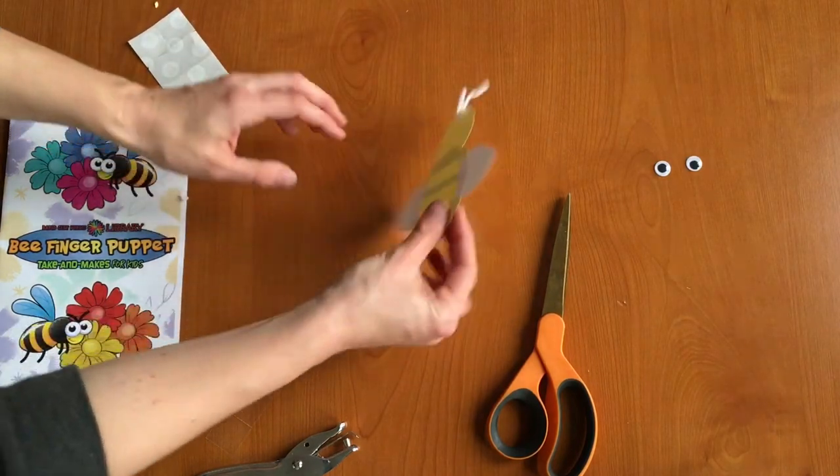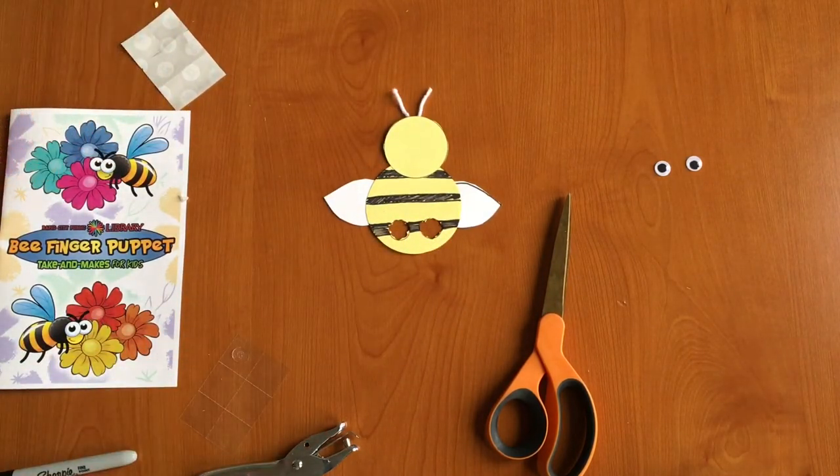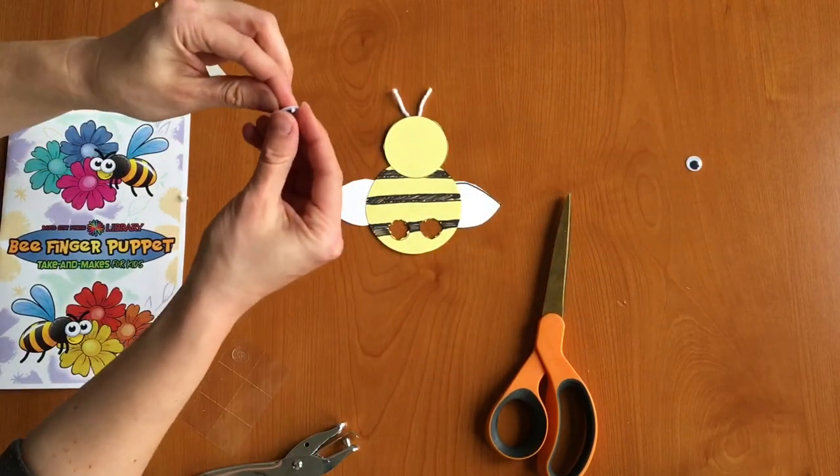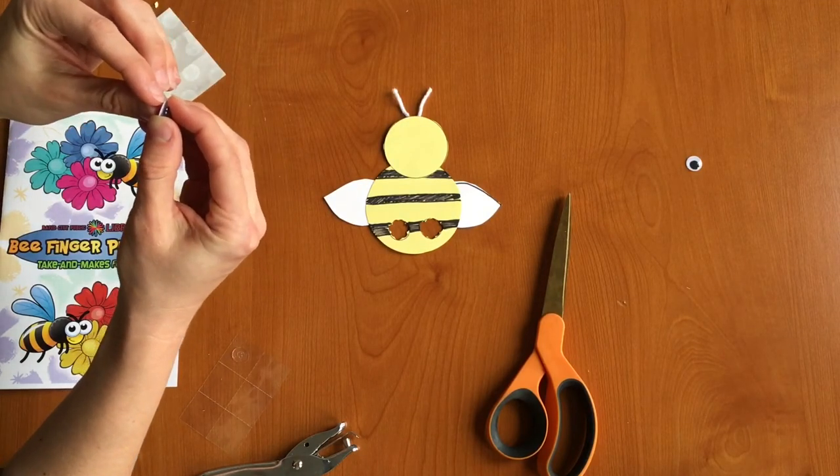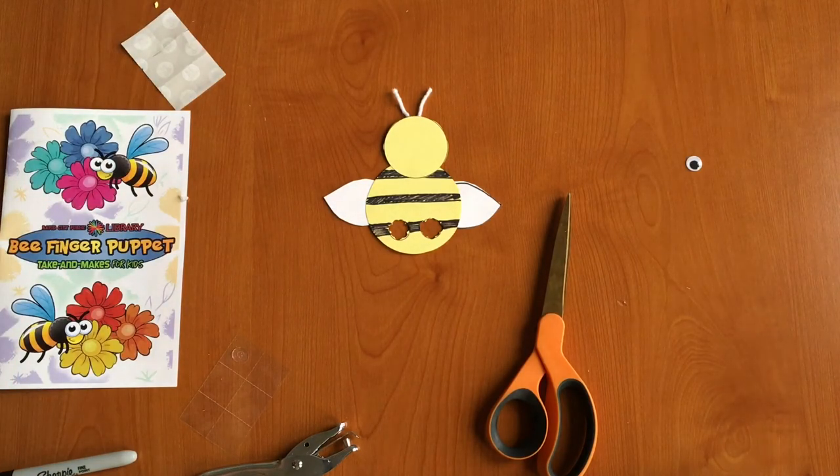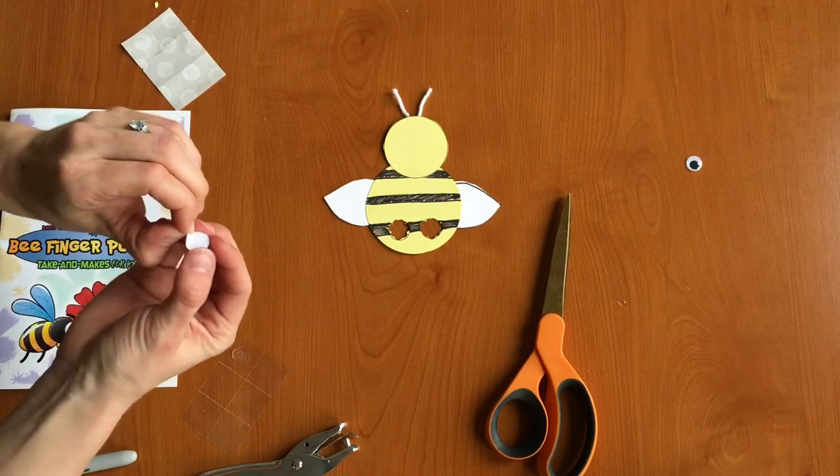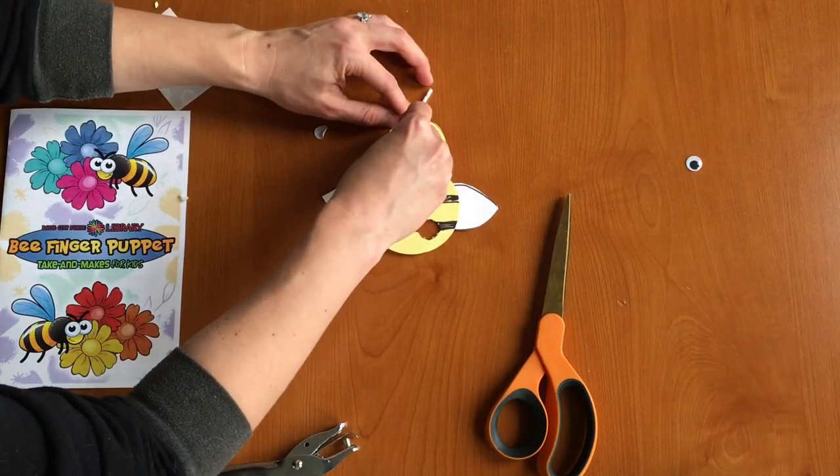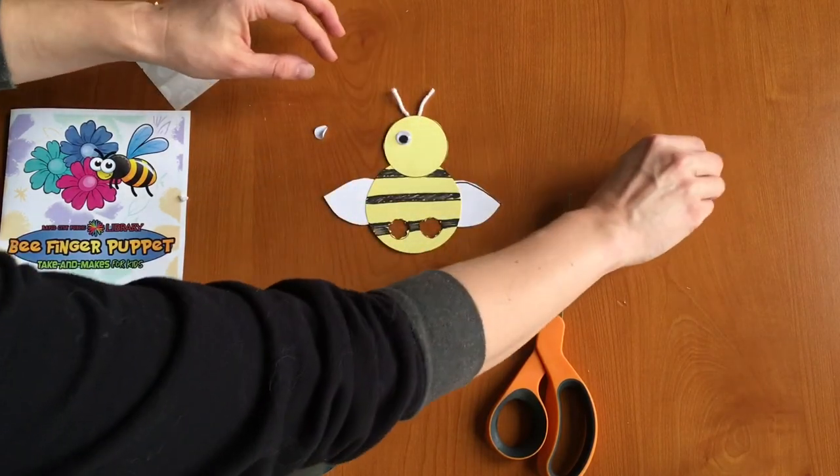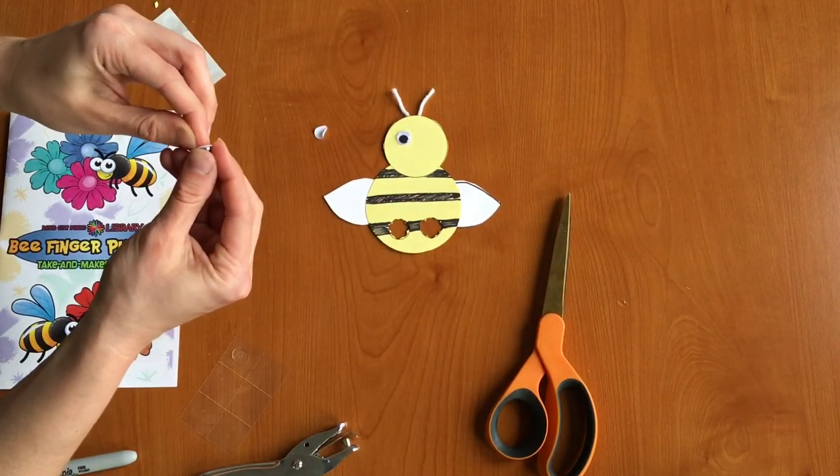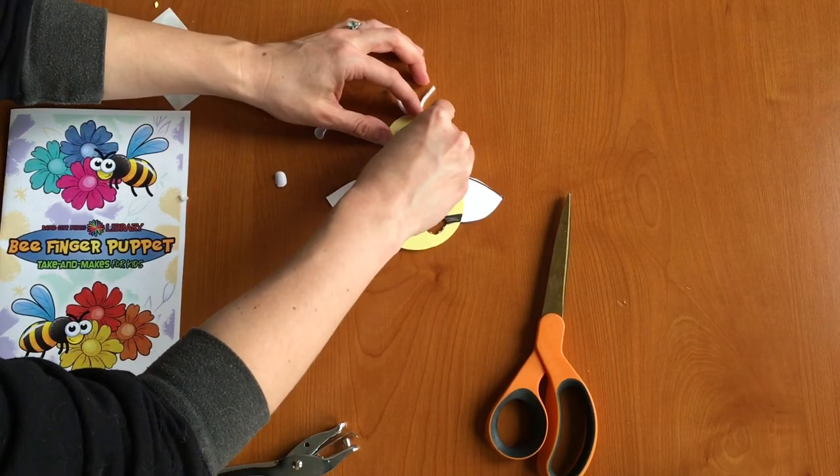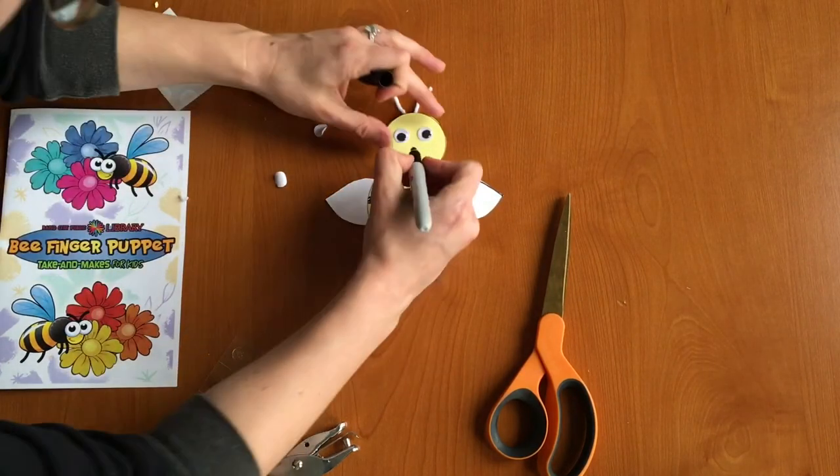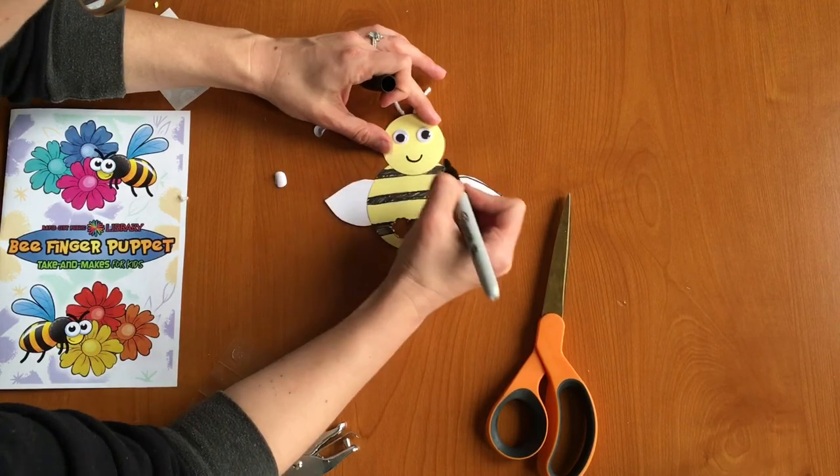Great. Now let's flip it back over and all that's left now is to put on your bee's googly eyes. So let's peel off the backs of these. These backs can be kind of hard to peel off but if you can't get them you can use some glue but they should peel off pretty easily. So one and two and let's give our bee a nice smile as well.